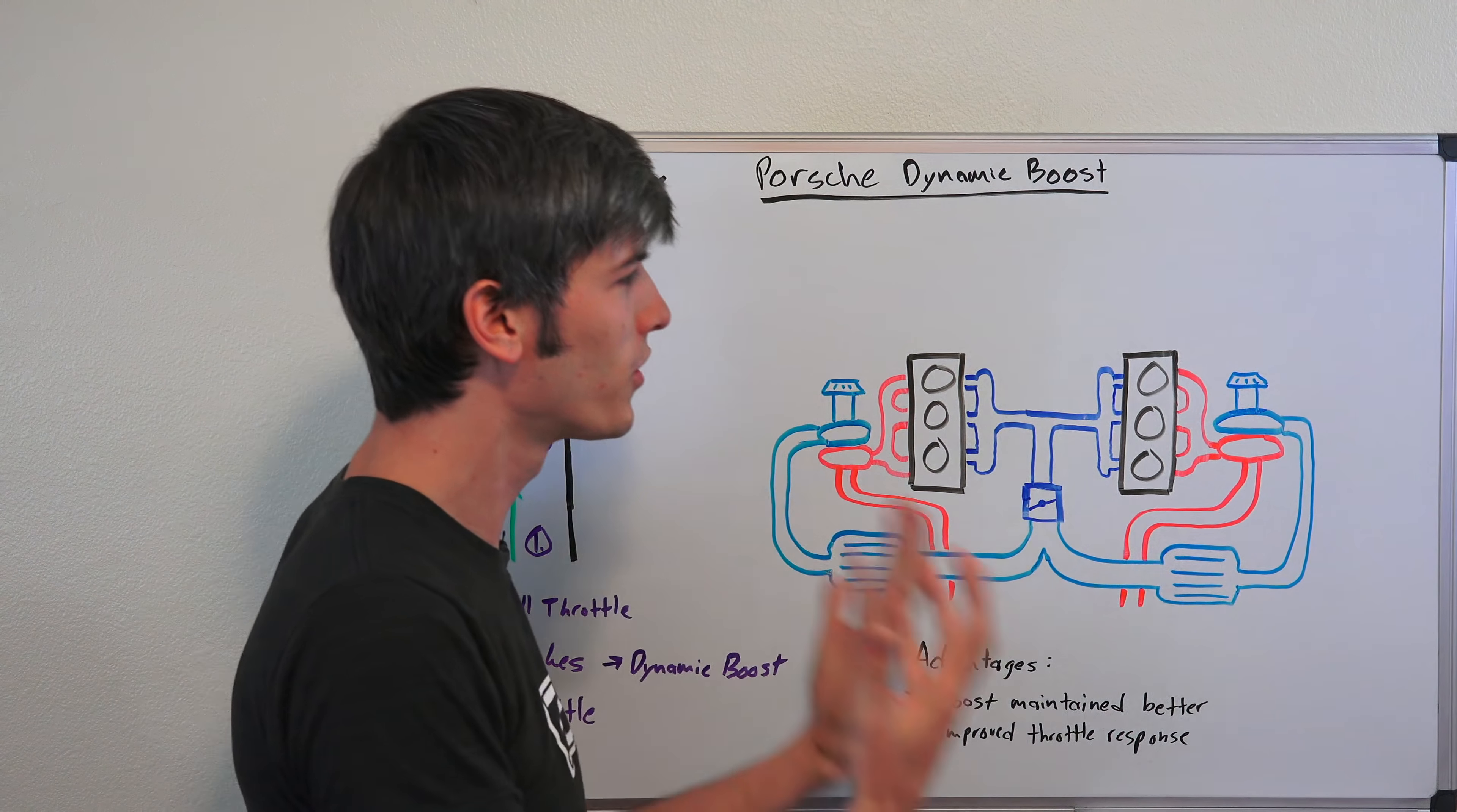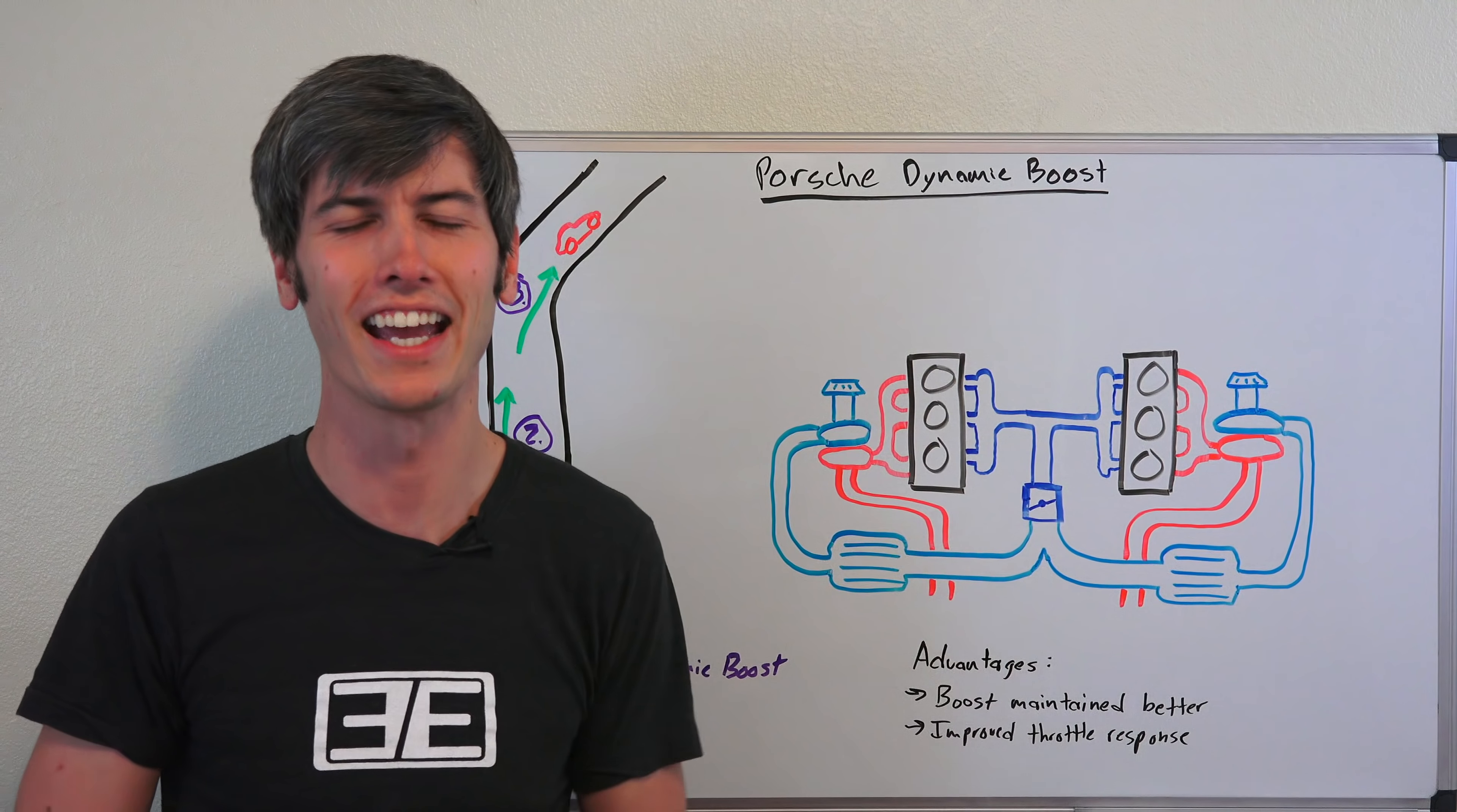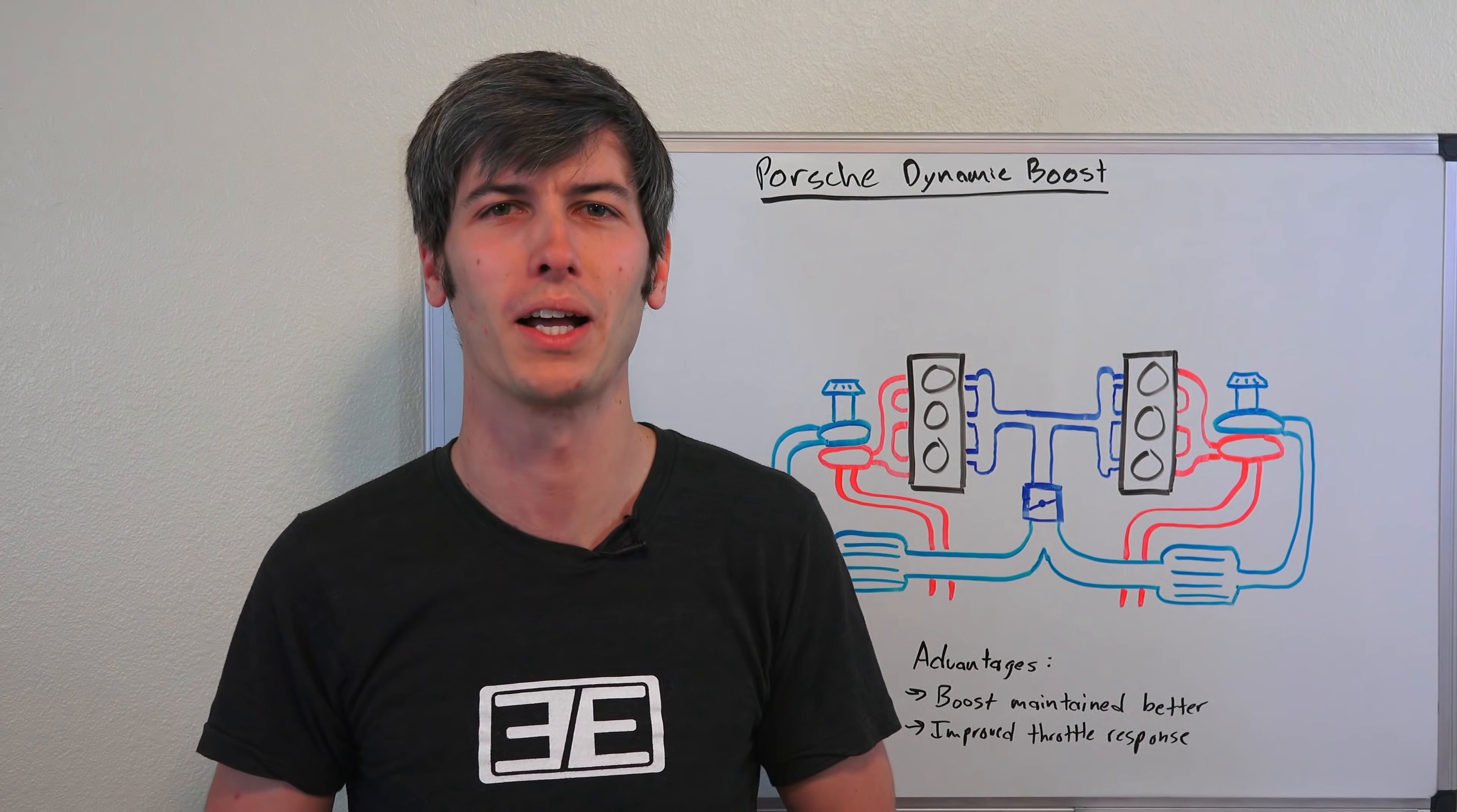So it's a neat system that they've done, a very simple solution - all you're doing is leaving the throttle open when you lift. So it's cool that something this simple can have an effect. And it's a bit strange because your foot is telling it to do one thing and the engine is doing something different in order to make you happy on that corner exit. But a neat system, I think it's cool what they've done. If you guys have any questions or comments of course feel free to leave those below. Thanks for watching.